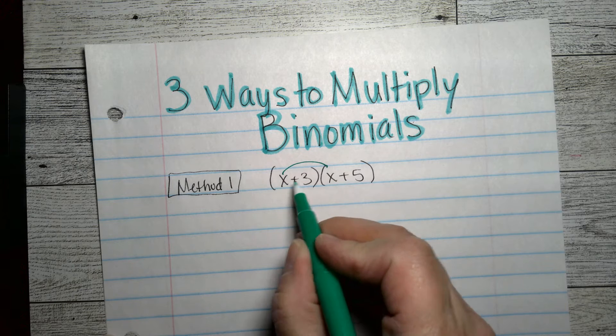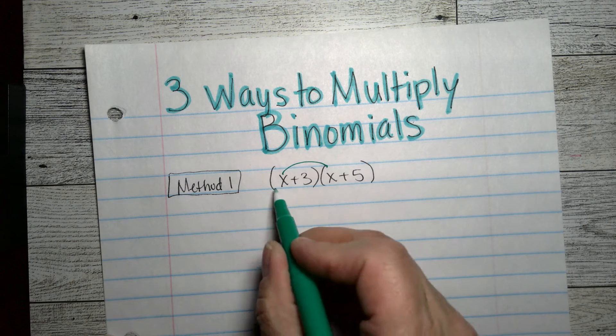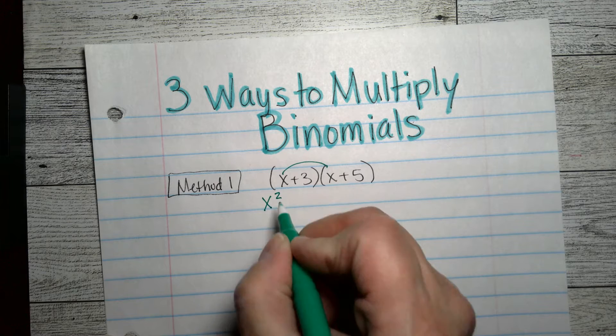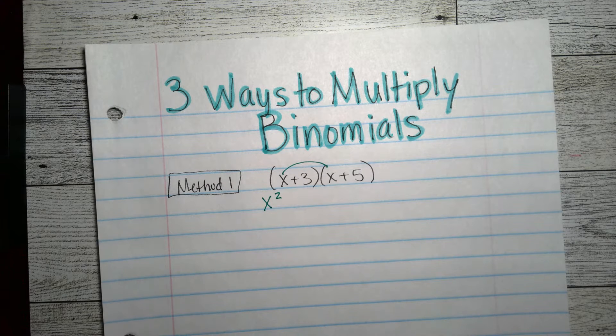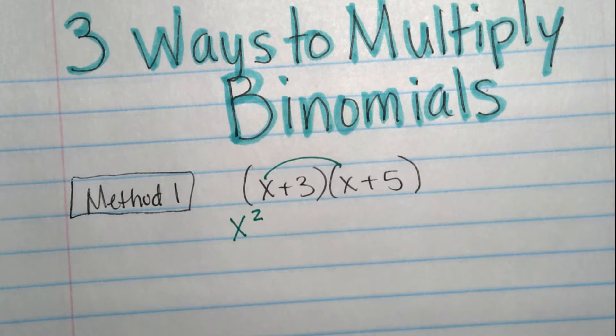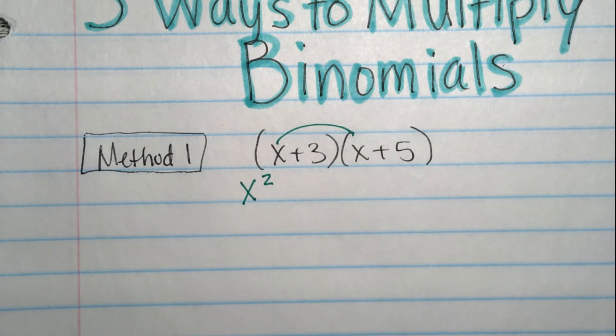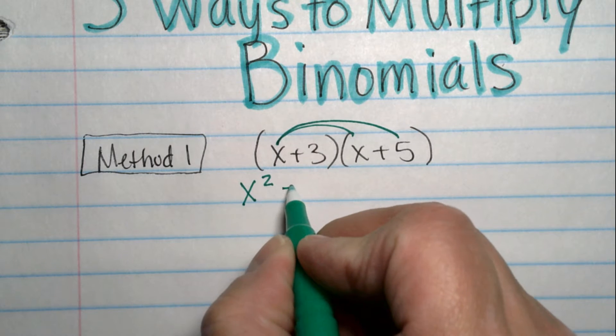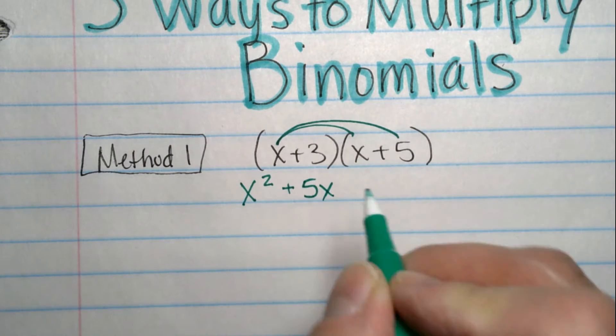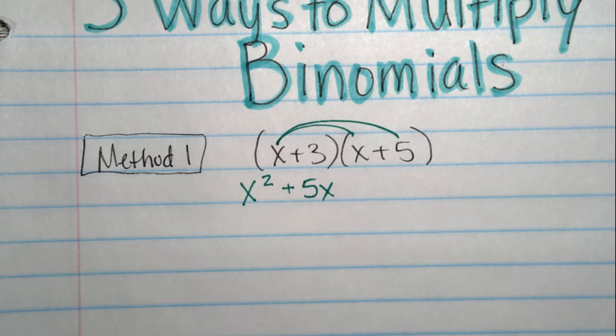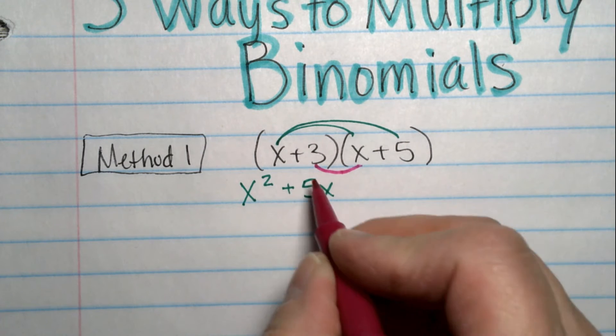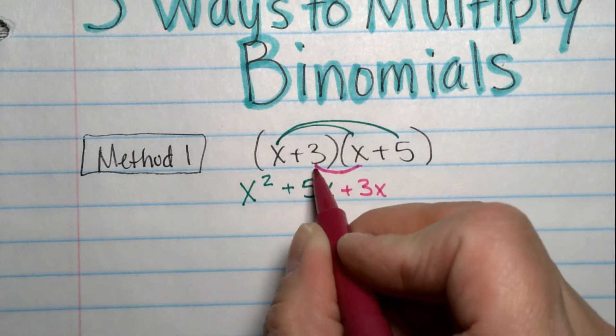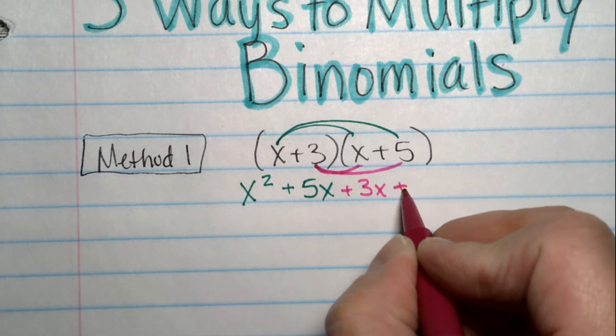I am going to multiply this x times that x and I end up with an x squared. And I can zoom in a little here. And then when I take this x times that five, I get a positive five x. Now I'm going to multiply the three times the first x and that's a positive three x. And then I'm going to multiply that three times the five and that's 15.